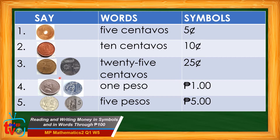For number four, we have the old one-peso coin and the new one-peso coin. We say one peso. If we write it in words, we write the words one then peso. And if we write it in symbols, we write the peso sign first then one followed by a decimal point and two zeros. The two zeros indicate that there are no centavos. We read this as one peso.